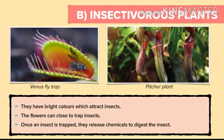Second type: insectivorous plants. You can see in the picture the examples Venus fly trap and pitcher plant. These are insectivorous plants. As they eat insects, they have bright colors which attract insects. The flowers can close to trap insects. Once an insect is trapped, they release chemicals to digest the insect. These plants eat insects because they grow in areas where there is a lack of nitrogen, and to fulfill the nitrogen, they eat insects.